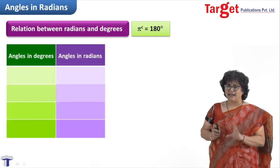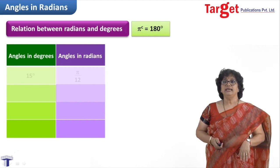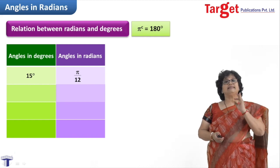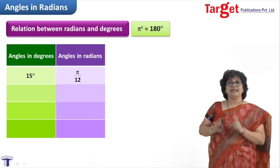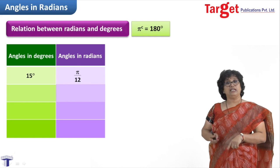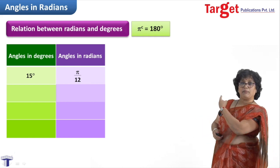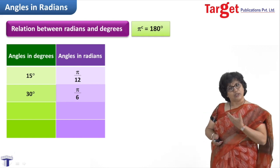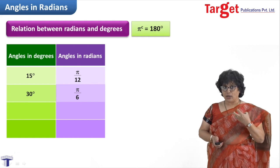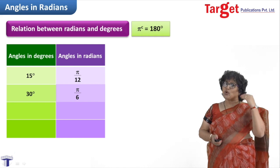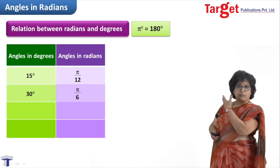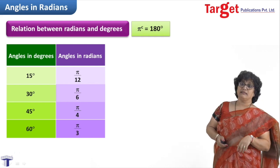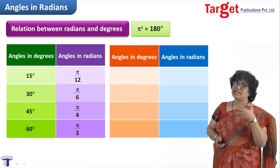Let us take some standard angles so that your evaluation work is shortened. For 15 degrees, the corresponding radian measure is π/12. Using the unitary method: 180 degrees = π radians, so 15 degrees = 15 × π/180 = π/12. For 30 degrees — double of 15 — it is 2 × π/12 = π/6. You can shorten the exercise: instead of repeating the unitary method, just multiply. Then 45 degrees is 3 times π/12, so π/4. And 60 degrees is double of 30 degrees, so π/3.